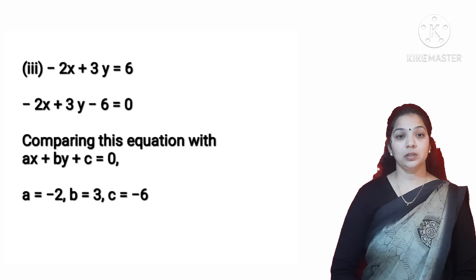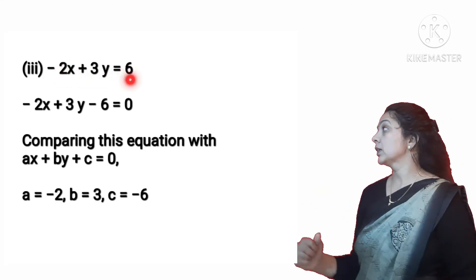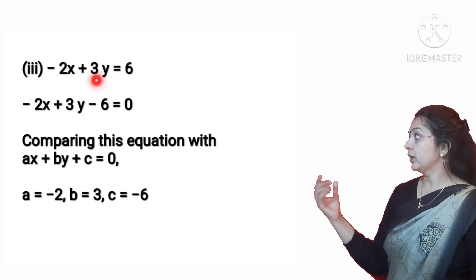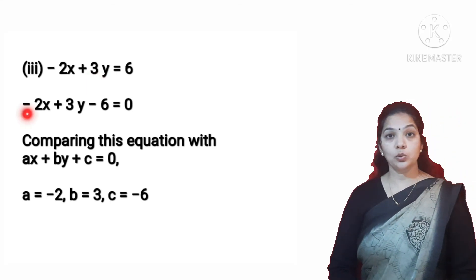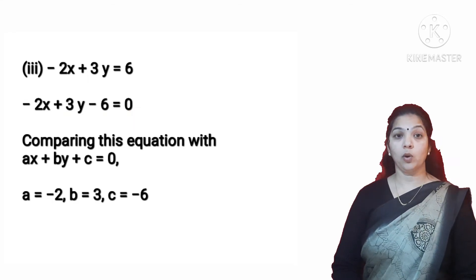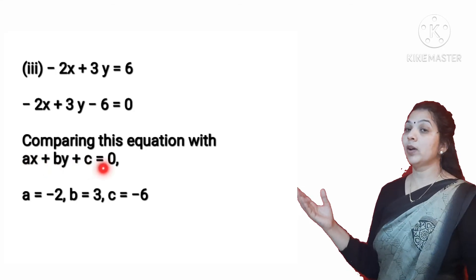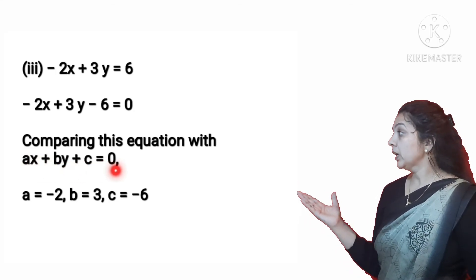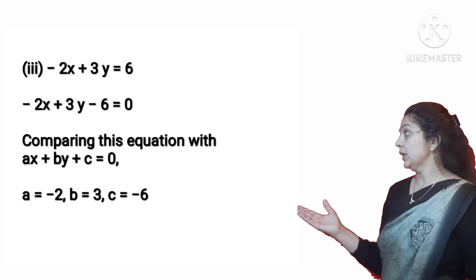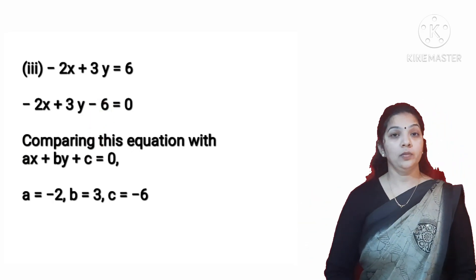The third part is minus 2X + 3Y = 6. Taking 6 to the left hand side, it becomes minus 2X + 3Y minus 6 = 0, which is now in general form. Comparing with AX + BY + C = 0, we get A = minus 2, B = 3, and C = minus 6.